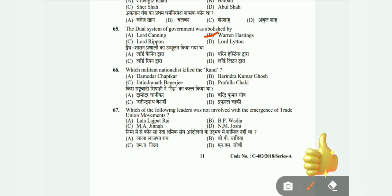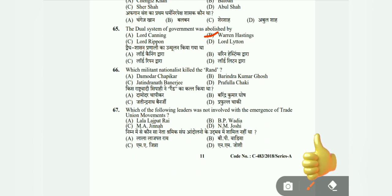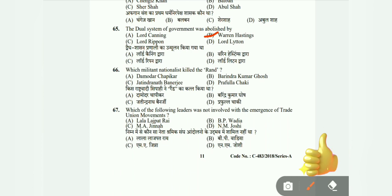Question 66: Which militant nationalist killed the Rand? Options: Damodar Chapekar, Bipin Chandra Pal, Jatindranath Banerjee, and Prafull Chaki. The correct answer is A, Damodar Chapekar.